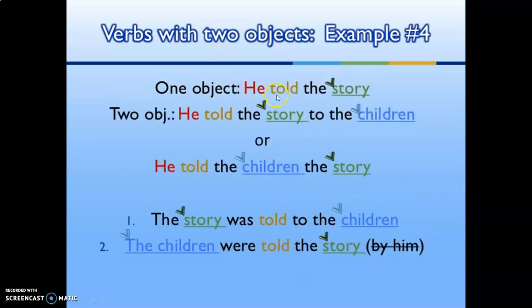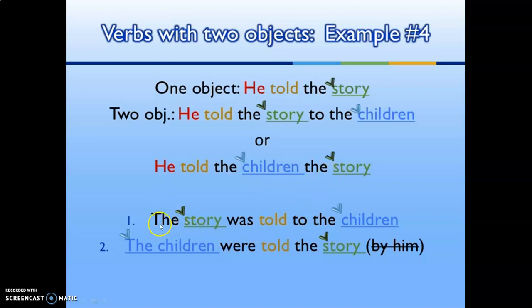Verbs with two objects, example four: 'He told the story' (one object). With two objects: 'He told the story to the children,' or 'He told the children the story.' In passive: 'The story was told to the children.' Or: 'The children were told the story.'